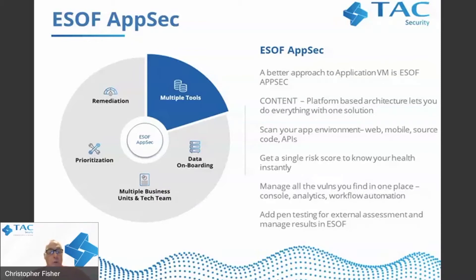Once you've onboarded the data and looked at the scores, you can start managing these vulnerabilities across multiple business units and technical teams. Using our analytics and risk scores, you can decide what is most important — your top priority, what to do first, which are the top vulnerabilities that need to be fixed to reduce the attack surface. When it comes to remediation, we help automate that workflow with interfaces to ticketing systems, generating tickets for your tech teams to remediate the critical vulnerabilities your security teams have identified.